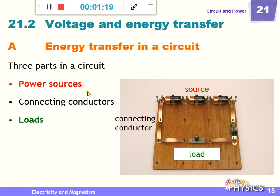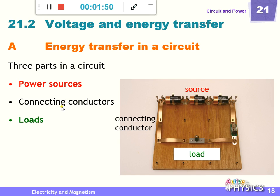Power sources means the energy provider. The loads means the energy consumer. To help the energy source transfer energy to the energy consumer — the loads — we should have connecting conductors. The power source may be the battery. The loads could be a resistor or a motor. The connecting conductor should be the copper wire.